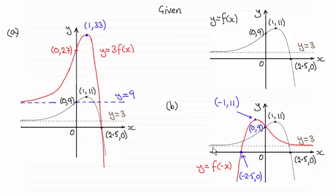So the asymptote will not change, it's still going to remain as y equals 3. But where it crosses the x axis at 2.5, 0, that's now going to be reflected across the y axis to minus 2.5, 0. The point on the y axis stays invariant, never changes.